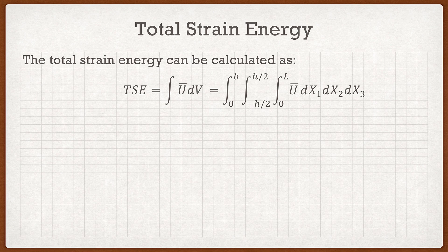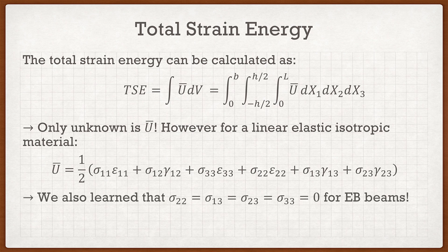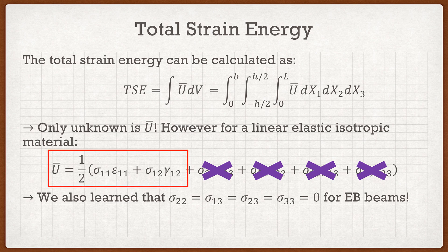Parameters B, H, and L are all kept parametric, so those are fine. The challenge is the strain energy density U. However, for a linear elastic isotropic material and using Euler-Bernoulli beam assumptions, we know that sigma22 = sigma13 = sigma23 = sigma33 = 0. This means four terms in the full strain energy density equation go to zero, and our equation simplifies to: U = (1/2)(sigma11 × epsilon11 + sigma12 × gamma12). There will be further simplification later.